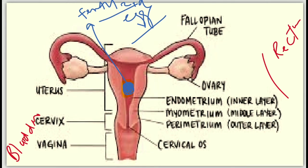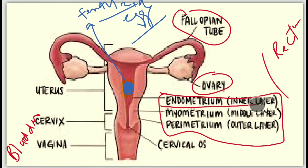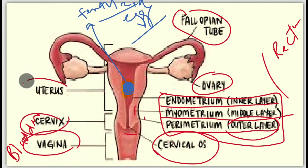Let us look at the main components of the uterus. We have the fallopian tubes and the ovaries. Inside the uterus we have different layers: the endometrium, which is the innermost layer; the myometrium, which is the muscular middle layer; and the perimetrium, which is the outermost layer. We also have the cervical os, the vagina, and the cervix.